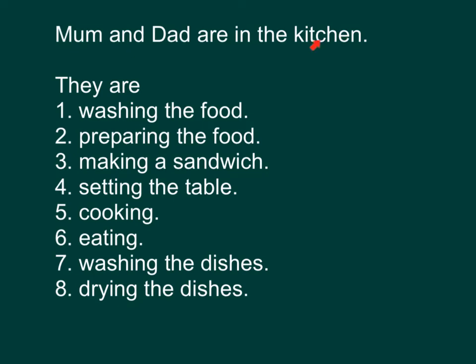Mom and dad are in the kitchen — 妈妈同爸爸在厨房里面。Mom and dad 是这个句子的 subject，我们可以用 they 来代表妈妈和爸爸。妈妈和爸爸合共有两个人，所以后面我们是跟 are。They are washing the food. They are preparing the food. They are making a sandwich. They are setting the table. They are cooking. They are eating. They are washing the dishes. They are drying the dishes.